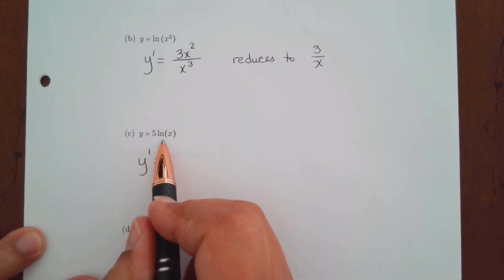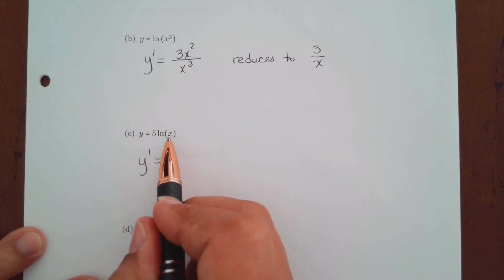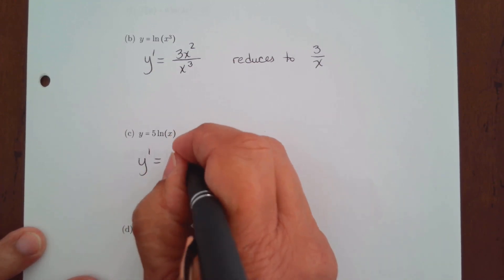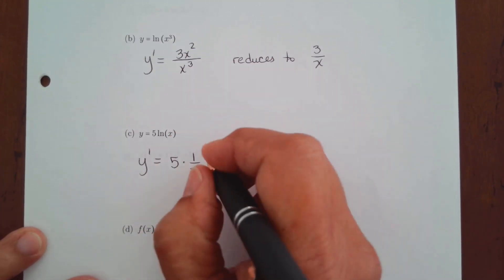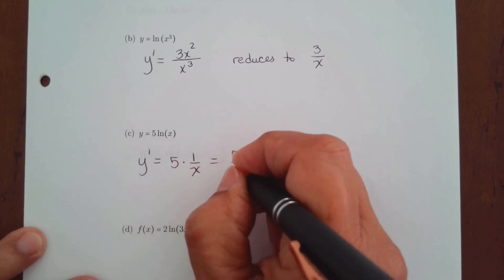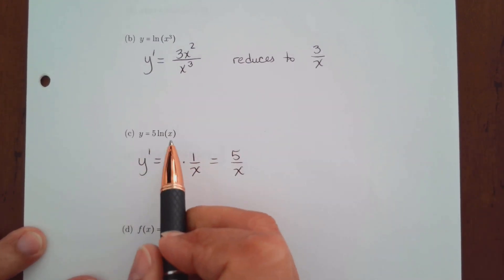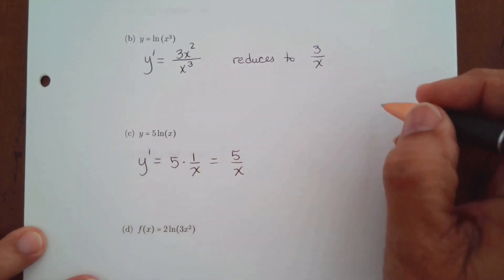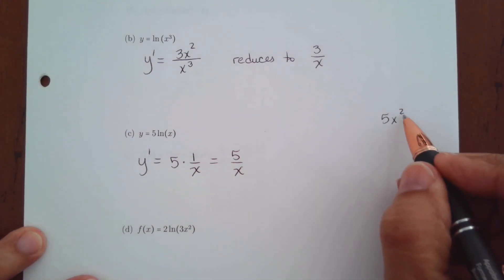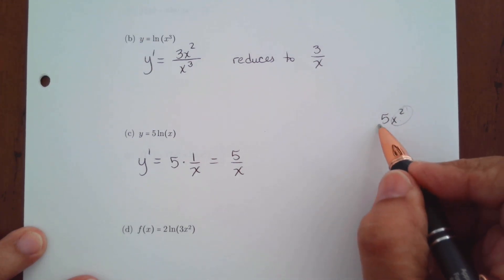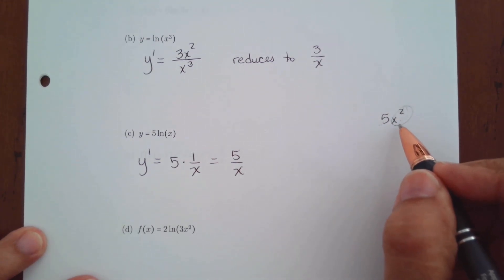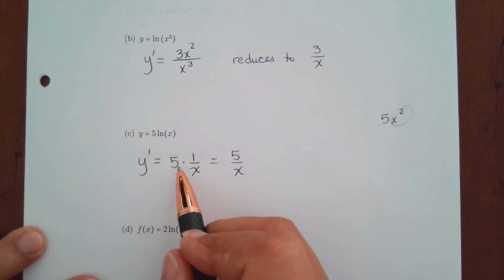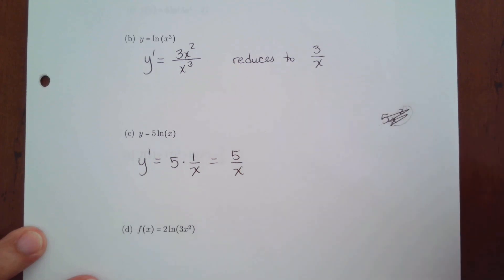For part c, we have a constant out front. Remember the constant stays in the numerator — don't lose it. The derivative of ln(x) is 1 over x, so you multiply that times the constant: 5 times 1 over x gives you 5 over x. It's just like when you have 5x squared and bring the 2 down — here the derivative is 1 over x, so the constant carries through.